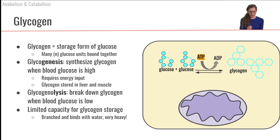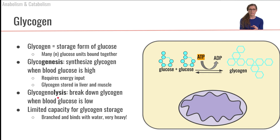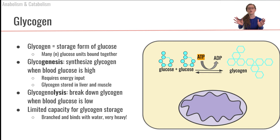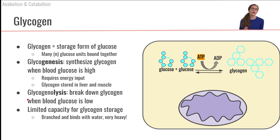The opposite process is glycogenolysis. You can see the word 'lysis' meaning breaking apart. Glycogenolysis is when we're going to cleave off glucose molecules from this large glycogen storage. We're going to want to do that when our blood glucose concentration has dropped, so we'll break apart glycogen and release those glucose molecules into the blood to bring our blood glucose concentration back up to homeostasis.